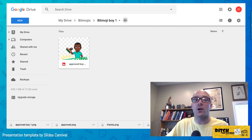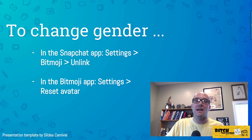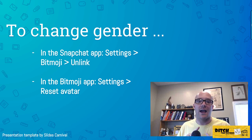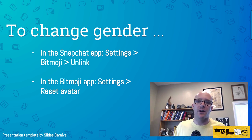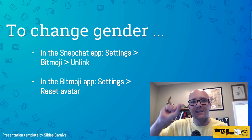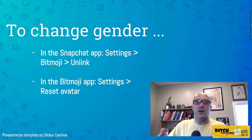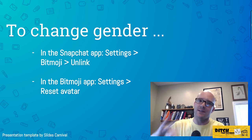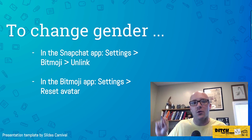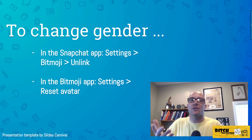To switch genders, you can do it through the Snapchat or Bitmoji app — the Bitmoji app is probably easiest. Open the Bitmoji app, tap the settings gear, and hit 'Reset Avatar.' This starts you from scratch and lets you choose boy or girl again. Since you just finished all the boys, select girl and go through creating all the girl Bitmojis.